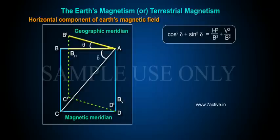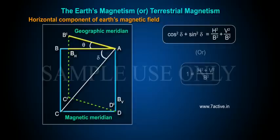Now cos²δ + sin²δ = H²/B² + V²/B², or 1 = (H² + V²)/B², or B = √(H² + V²).